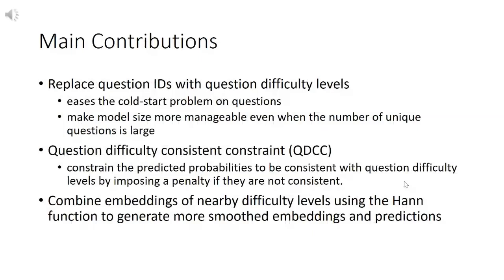We further use two techniques to smooth the predicted scores. One is to constrain the predicted probabilities to be consistent with question difficulty levels by imposing a penalty if they are not consistent. The other is to combine embeddings of nearby difficulty levels using the band function to generate more smoothed embeddings and predictions.